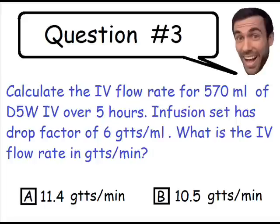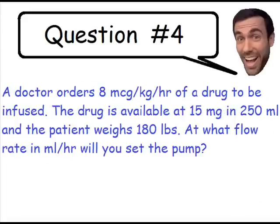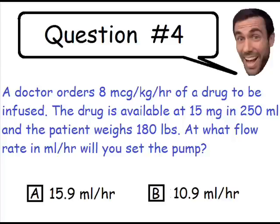And now we will move on to question number four. A doctor orders 8 micrograms per kilo per hour of a drug to be infused. The drug is available at 15 milligrams per 250 milliliters of solution. If the patient weighs 180 pounds, at what flow rate in milliliters per hour will you set the pump? You can choose between A, 15.9 milliliters per hour, or B, 10.9 milliliters per hour.